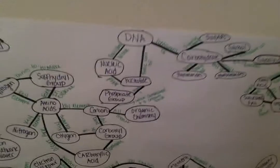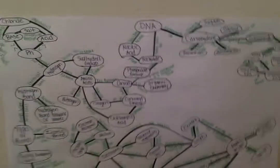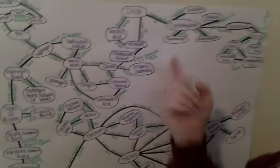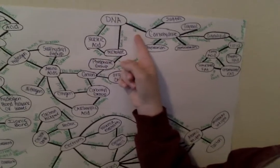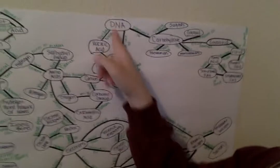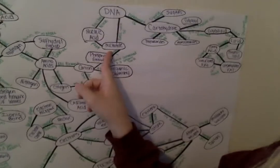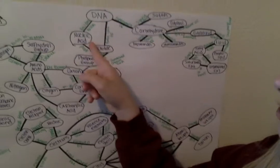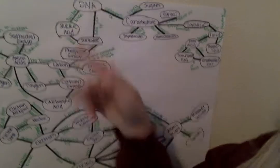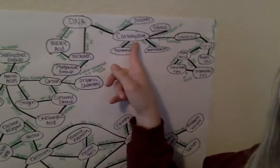My concept map all starts with DNA. Off of DNA, a lot of things are happening. You have components of DNA, which are carbohydrate. You have a basic unit of DNA, which is nucleotide. And then you also have a nucleic acid, which is a building block of DNA. So we're going to start with the carbohydrate and move from there.